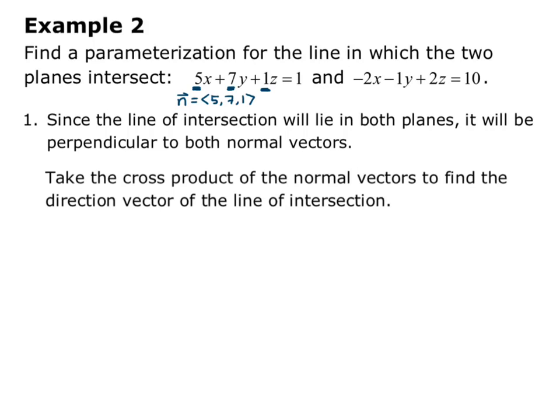Remember the normal vector is the numbers attached to the x, y, and z. So for the first plane, n = <5, 7, 1>. And for the second plane, n = <-2, -1, 2>.